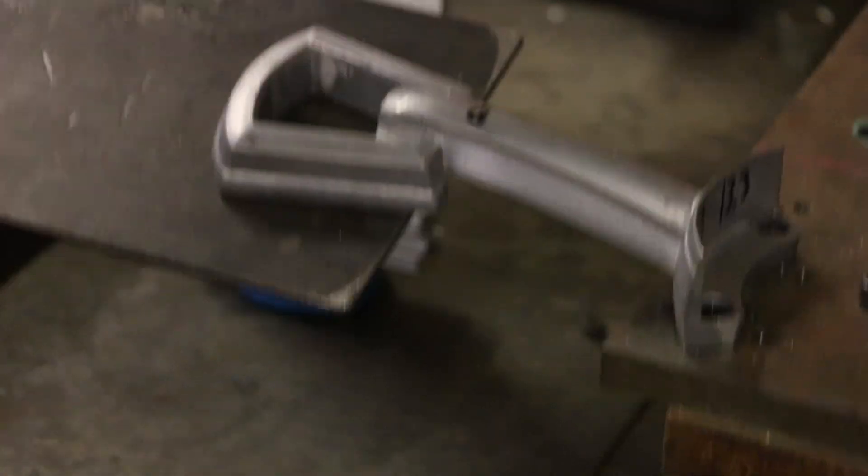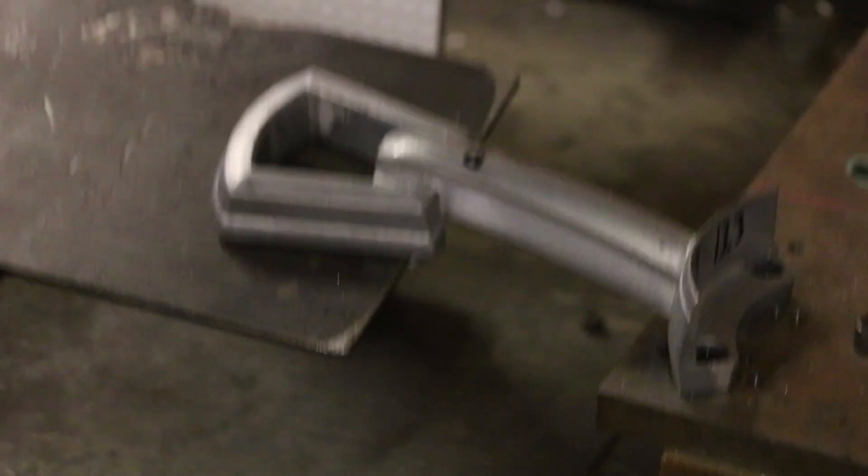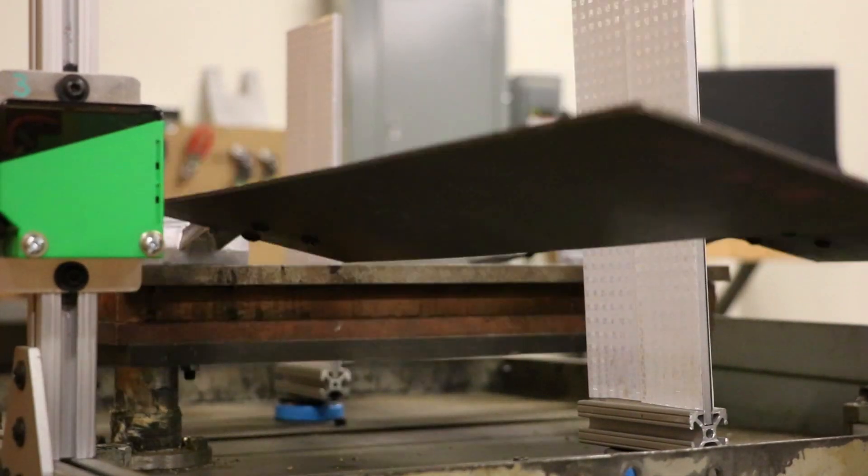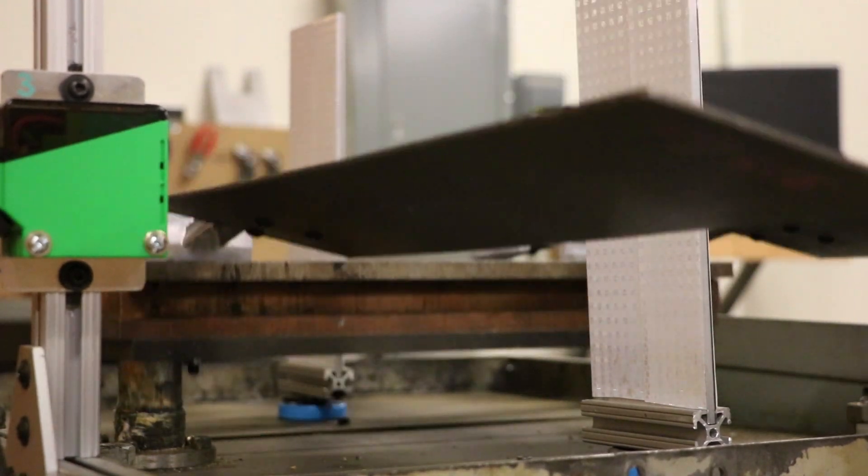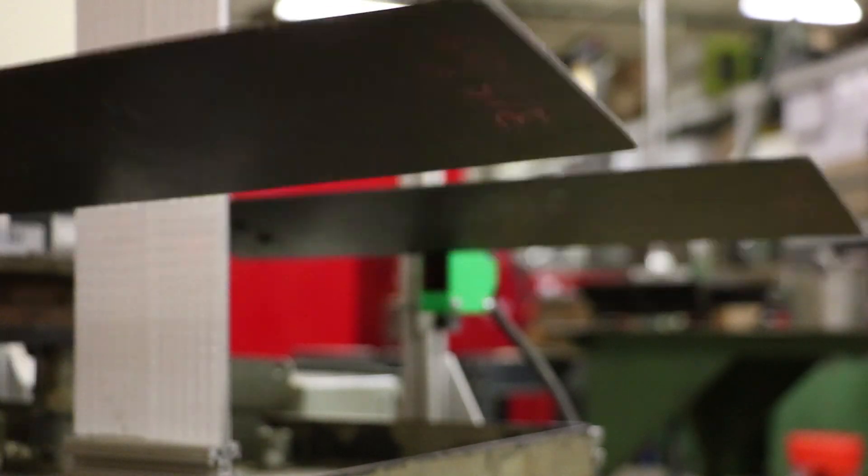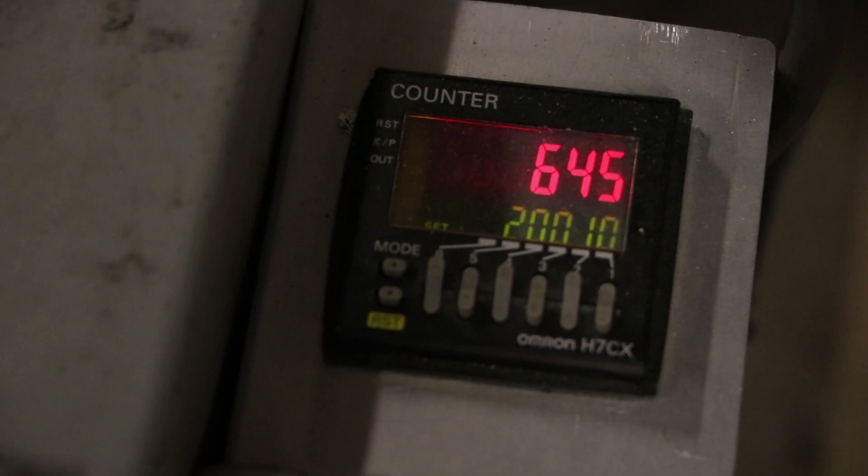The blade iron shake test is a very dynamic test where we add a weighted fan blade, a metal fan blade to a blade iron that weighs several times more than the wooden blade that normally comes on a fan, and we shake it 20,000 cycles.